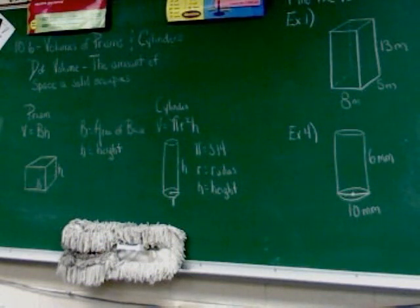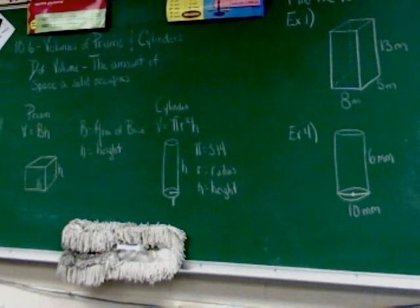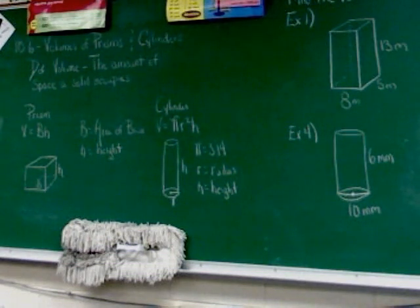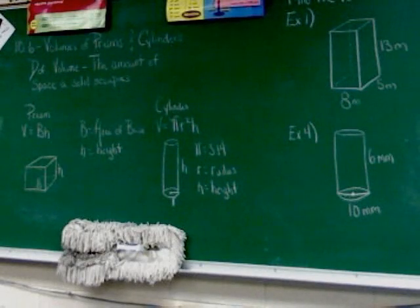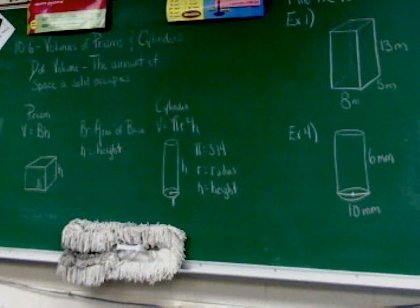Chapter 10, Section 6 is entitled Volumes of Prisms and Cylinders. Start with the definition of volume. Volume is defined as the amount of space a solid occupies.